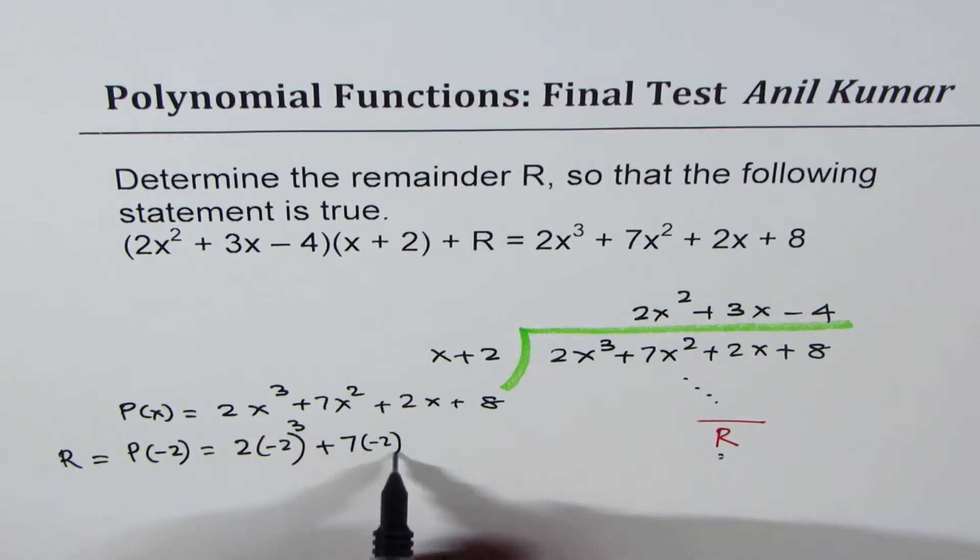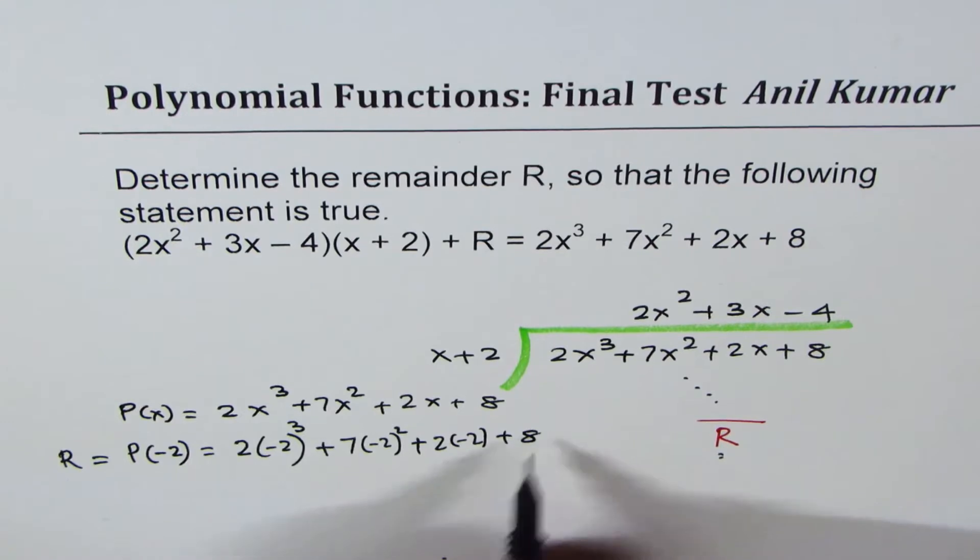7 times minus 2 squared plus 2 times minus 2 plus 8.